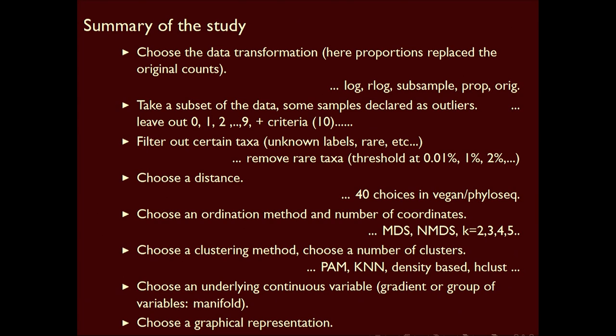Well, in fact, I had to choose what the transformation of the data was, and I showed you we can use proportions, original ones, you can subsample. We have regularized log which are used for variant stabilizing to get rid of the heteroscedasticity. Other people just used the logs. So that's already five different choices.